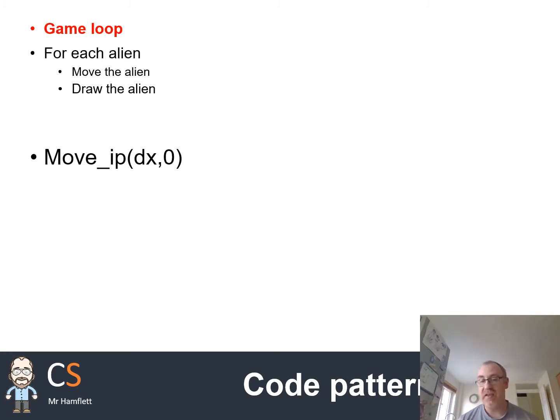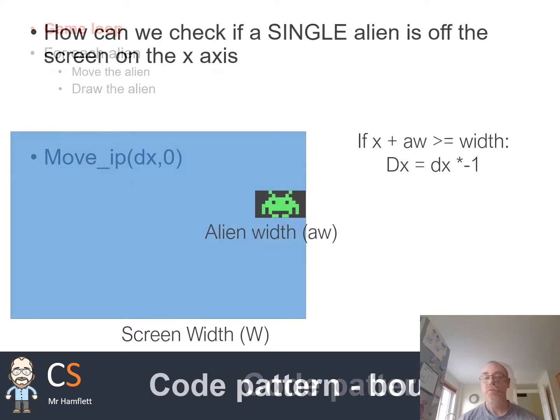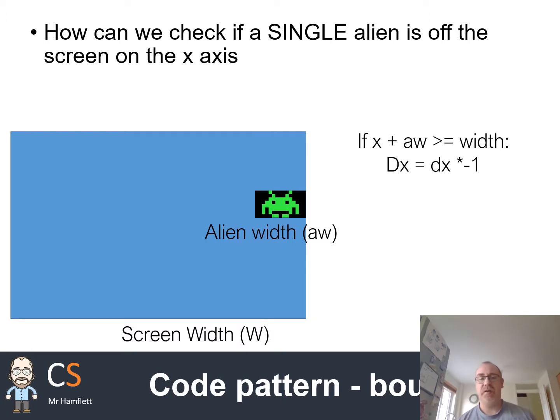The DX variable is simply direction change in X. That's going to be a positive number to move to the right or negative number to move to the left. So the idea then becomes bouncing. When we hit the edge of the screen, we want to reverse direction. Now to reverse direction, we simply take that direction that we're currently traveling in and times it by minus one.